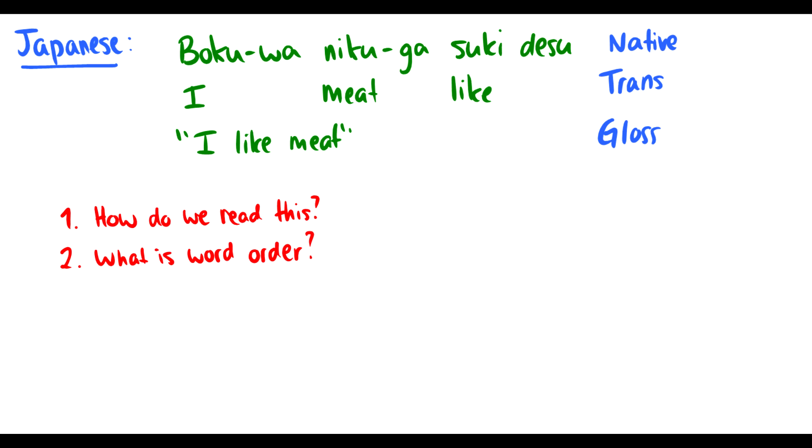We have a rough translation, usually with word features in the second line, and then we have something called the gloss on the last line, which is what it would be translated in our language. For instance, this 'bokuwa' here means I, or first-person singular. Then we have 'nikuga,' which is meat.object, and the word 'suki desu' meaning like, and this translates to 'I like meat.' Clearly, the word order, if we take a look at the native translation, is not exactly SVO because we can see that the verb is the last thing in the sentence. So the word order for Japanese is subject-object-verb.